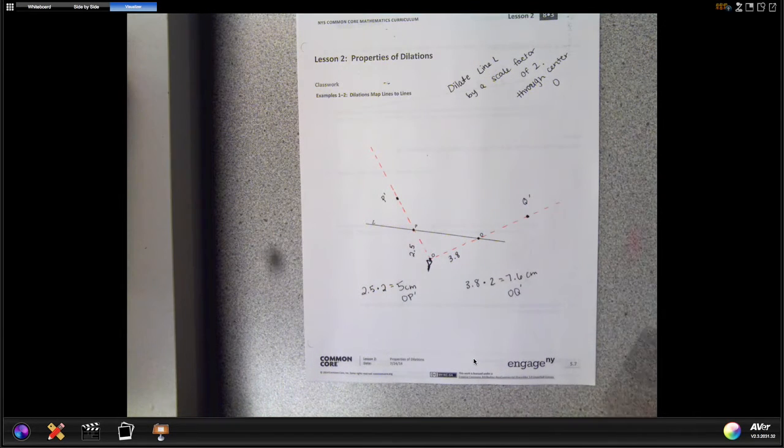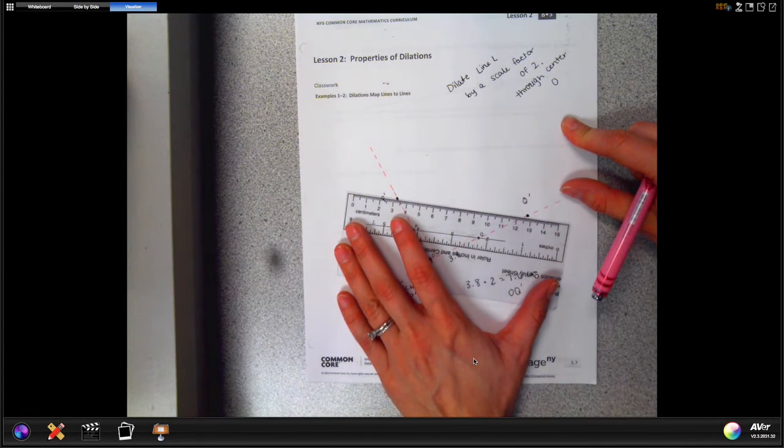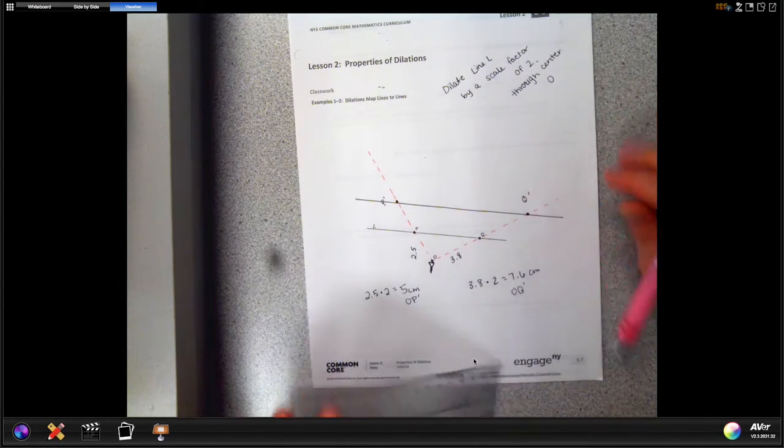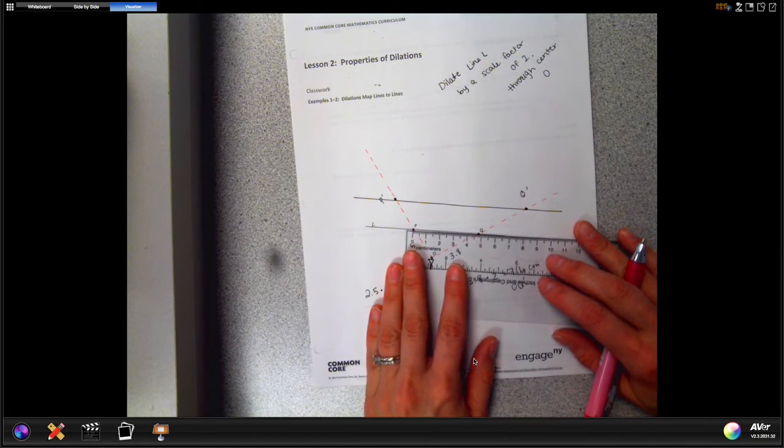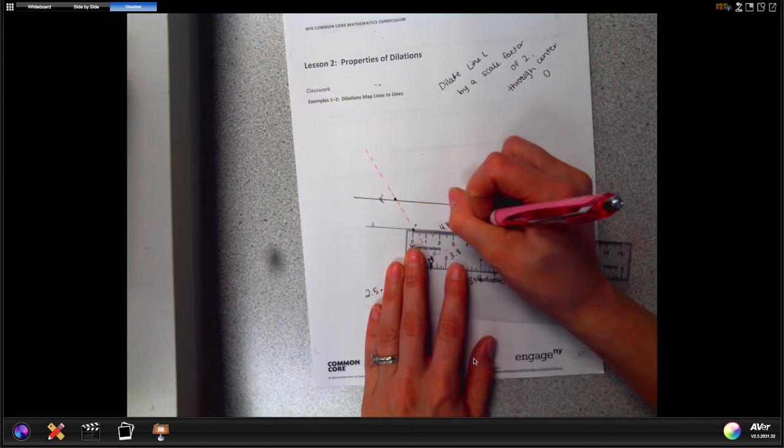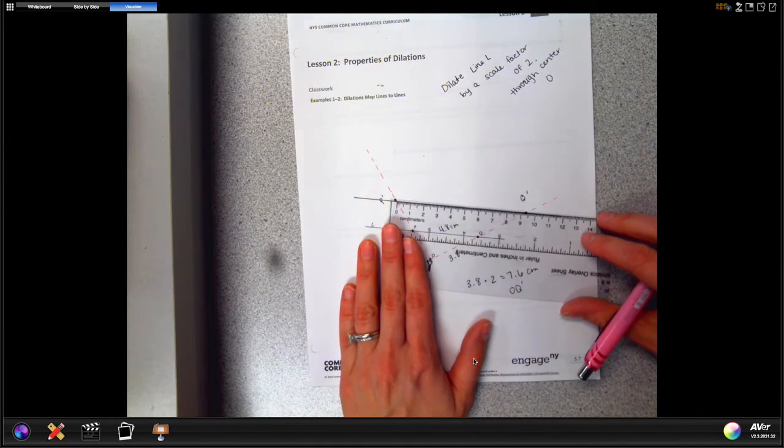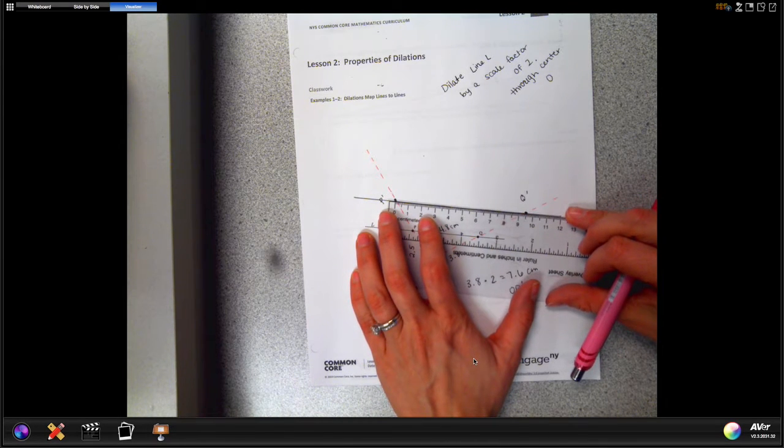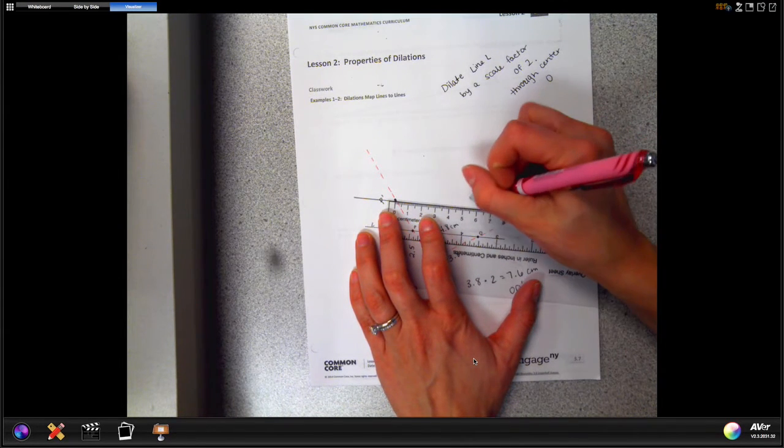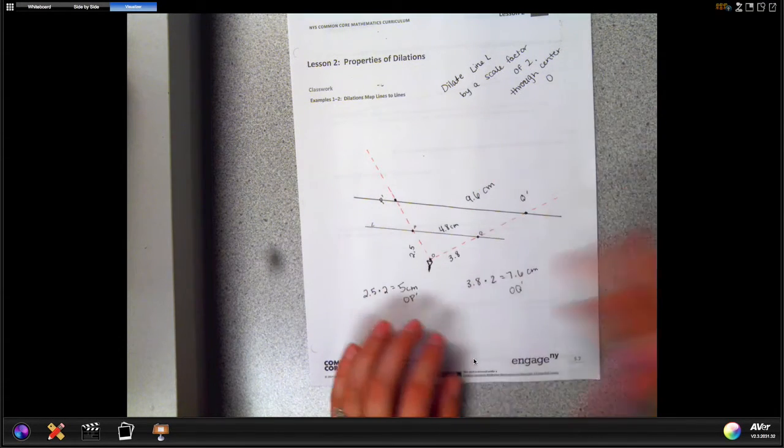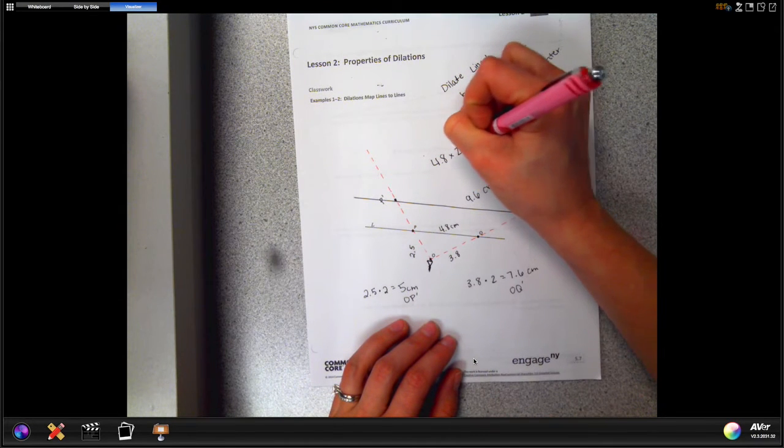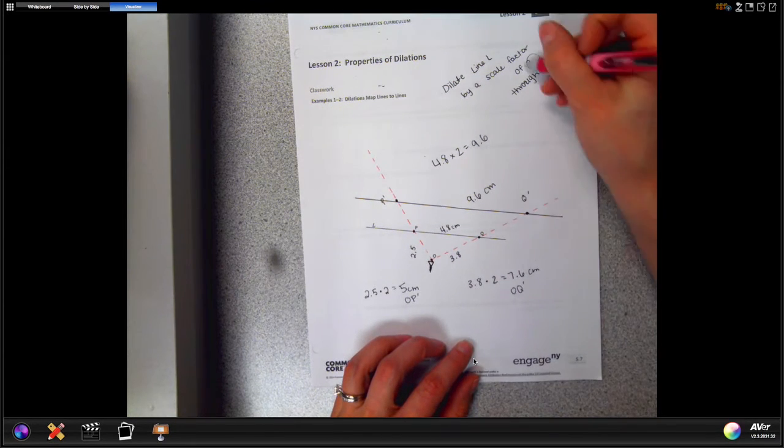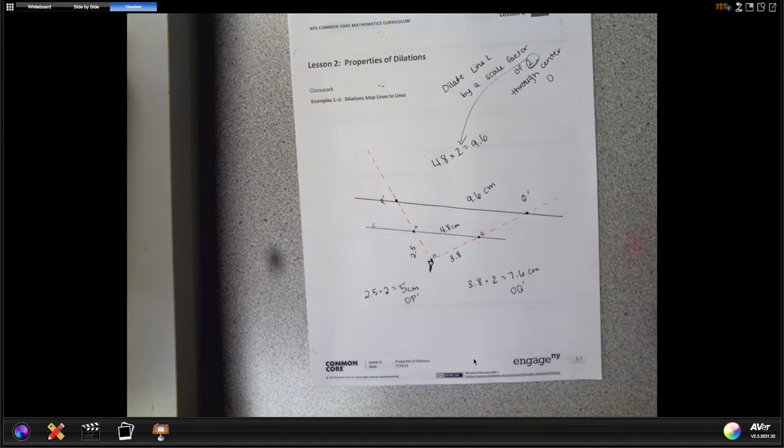And that's our dilation of the two points. And we'll use those two points now to draw a new line L. We have dilated line L. And if you now measure in the middle the original P to Q, if you measure there is about 4.8 centimeters. If you measure out here now, I got 9.6 centimeters. So 4.8 times 2 equals 9.6. We did the dilation correctly. Our scale factor of 2 worked for that as well. That's the introduction, lines to lines.